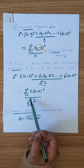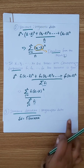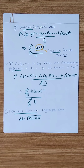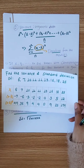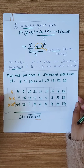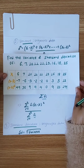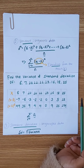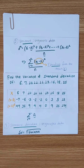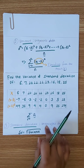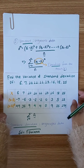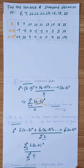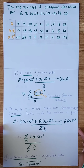We can find the variance and the standard deviation. The mean is calculated as the sum of x over the number of observations.